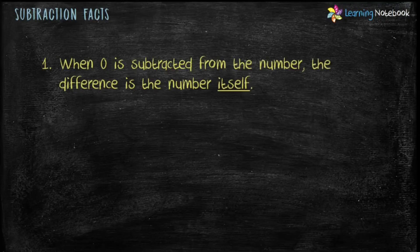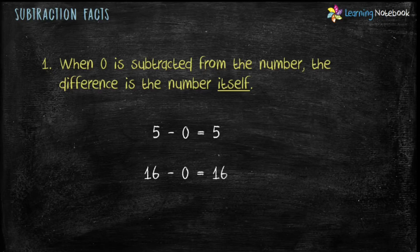The first subtraction fact is: when 0 is subtracted from a number, the difference is the number itself. For example, 5 minus 0 equals 5, and 16 minus 0 equals 16.